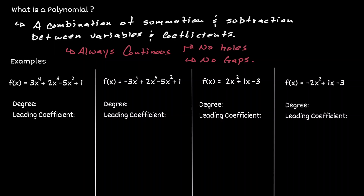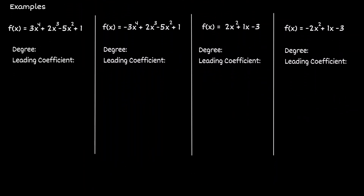Let's take a look at some examples. Here we are given four polynomials. Let's concentrate on the first example. When we have either an addition or a subtraction, we are separating terms. So this polynomial will have one, two, three, and four terms. And we can also say that this polynomial is written in standard form, because if we take a look at the terms from left to right, the exponents decrease in value.